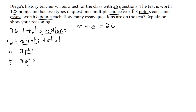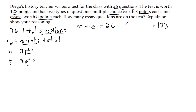We have a second total that deals with the number of points, so our second total shall be equal to 123. This is how we know that we are dealing with a system of equations — the problem literally gives us two totals. So we're going to have something equal to 26 and something equal to 123. We have to come up with an equation that represents the total number of points.